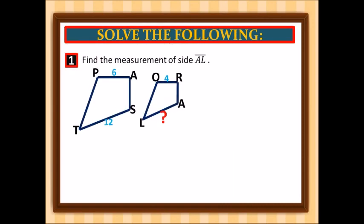Find the measurement of side AL. We are going to create our proportion. We have PA over ST, and PA over ST corresponds to OR over AL. So PA corresponds to OR, and ST corresponds to AL.